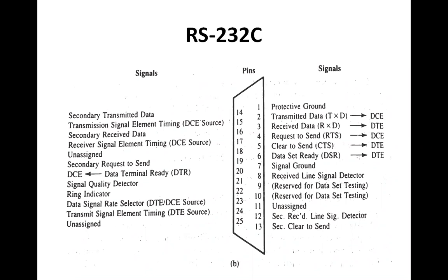Pin number six is Data Set Ready (DSR), a modem condition signal that is normally active when the modem is powered up. On a modem that can operate in voice or data mode, this pin goes low for data mode and high for voice transmission. Pin number seven is signal ground, the ground reference for signals transmitted on the TD line.